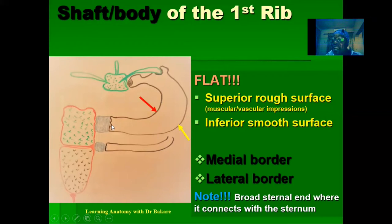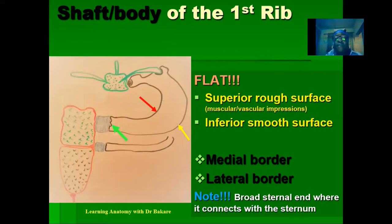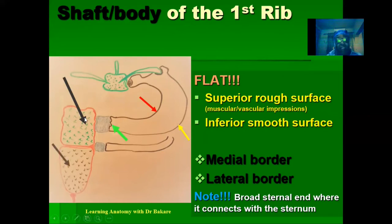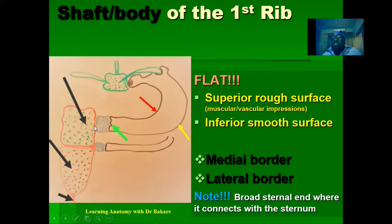The terminal sternal end of the first rib appears very broad compared to other ribs. This is where it connects with the costal cartilage, which then connects to the sternum. The specific region of the sternum that the first costal cartilage connects to is the manubrium. The sternum is subdivided into three regions: the manubrium, the body, and the xiphoid process. The manubrosternal joint corresponds to the second costal cartilage and the second rib, while the first rib and first costal cartilage are seen just above that, at the lateral surface of the manubrium.